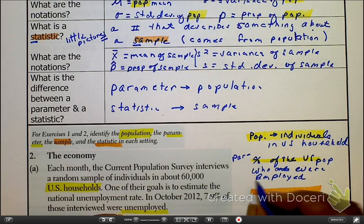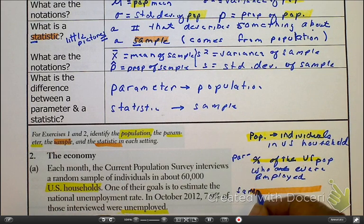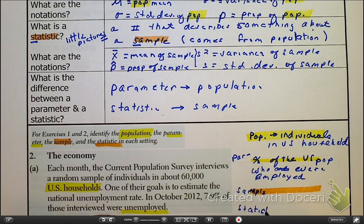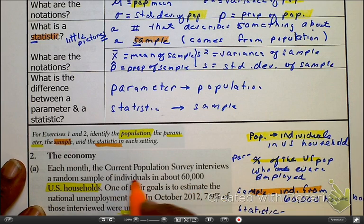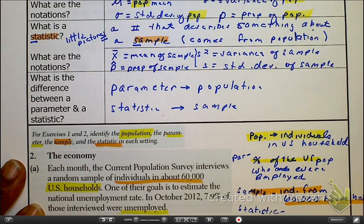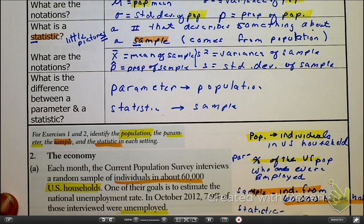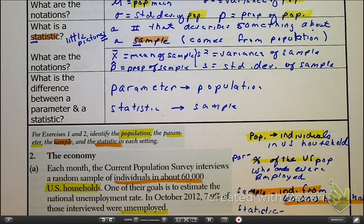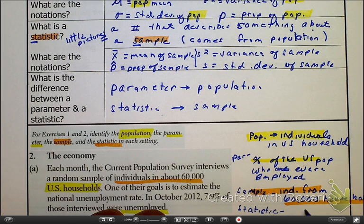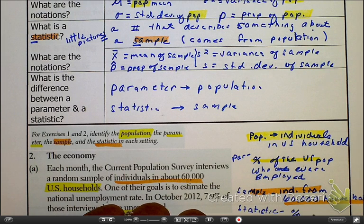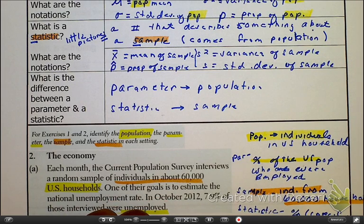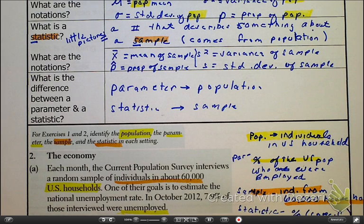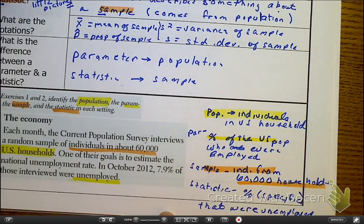Now, as I look at the sample and the statistic, please notice, I can get a little bit more specific. So, here, this is the 60,000 individuals from the individuals that come from that 60,000 household. And the statistic is the percent, the specific percent that were unemployed.